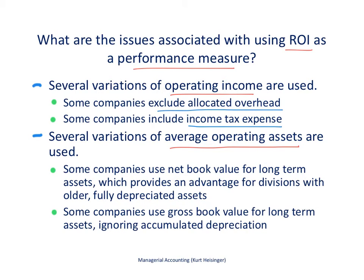There are also several variations on average operating assets in the denominator. Some companies use net book value for long-term assets — cost minus accumulated depreciation. Others use gross book value — cost without subtracting accumulated depreciation. This starts to cause issues when comparing divisions with fully depreciated old assets versus divisions with relatively new assets, which can distort results. These are the types of issues we must consider as a company, making sure we're consistent across all divisions.